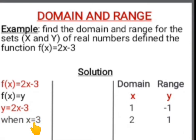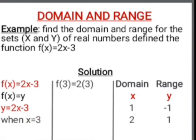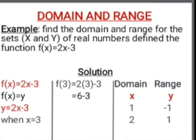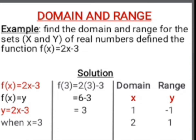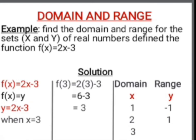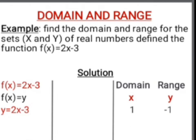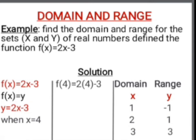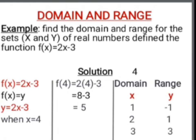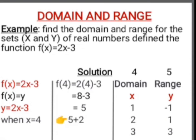Let's also put x = 3: f(3) = 2(3) - 3 = 6 - 3 = 3. So when the domain x is 3, the range y is also 3. If we put x = 4: f(4) = 2(4) - 3 = 8 - 3 = 5. So domain is 4 and range y is 5. Looking at the range, a pattern has been established — each time we increase x by 1, the range increases by 2. Hence the next range is 5 + 2 = 7, then 7 + 2 = 9, and this continues.